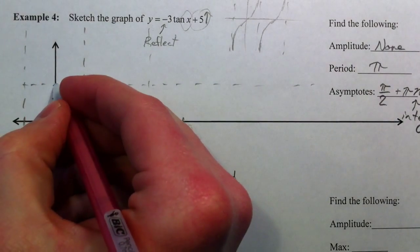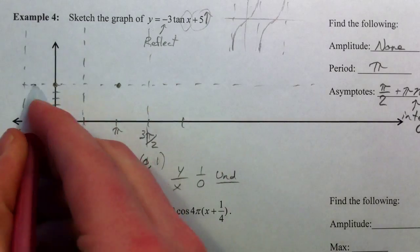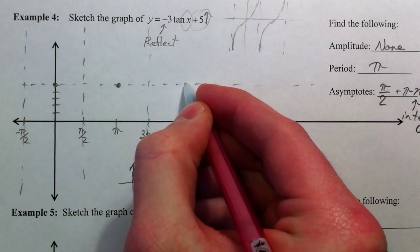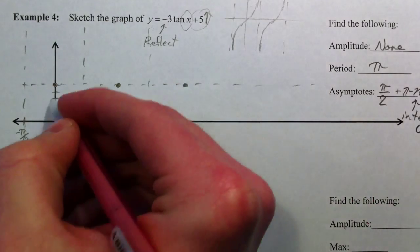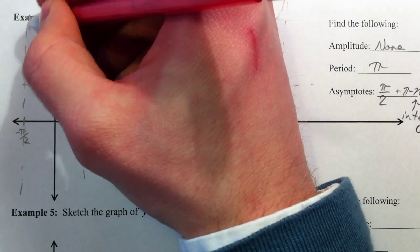So, now I know I want to be centered around this dot. I'm centered around that middle line 5, and instead of going up and to the right, because of the negative, I'm going to fall down and to the right.